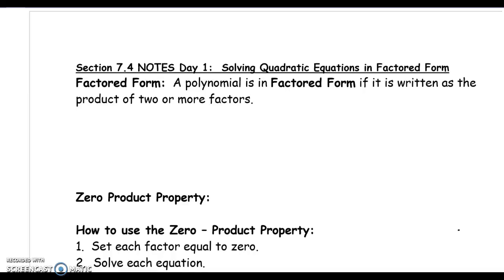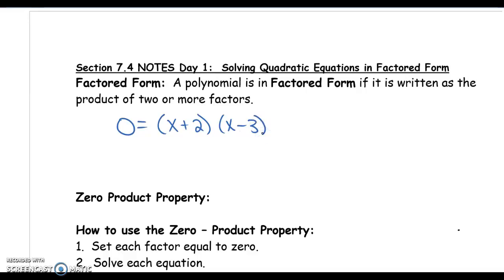A polynomial is in factored form if it is written as the product of two or more factors. That is the math way of saying it's in factored form if it's broken up with parentheses. Here's an example of a polynomial written in factored form: 0 equals x plus 2 times x minus 3. We have been looking at taking two binomials like this and multiplying it out, getting it out of factored form into expanded form. But now we're going to look back at factored form.